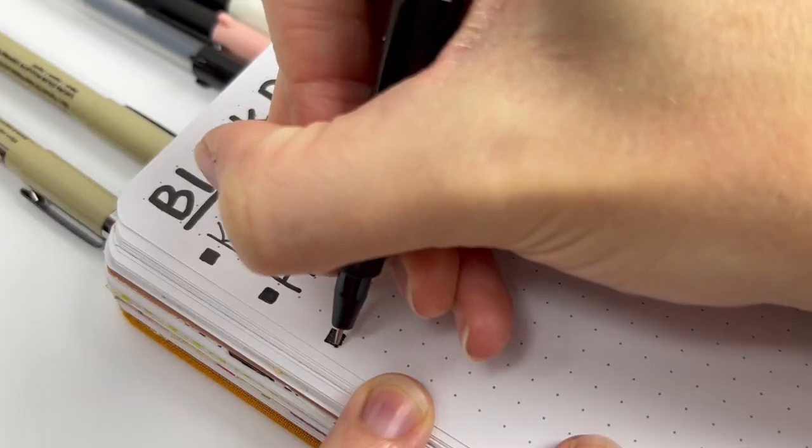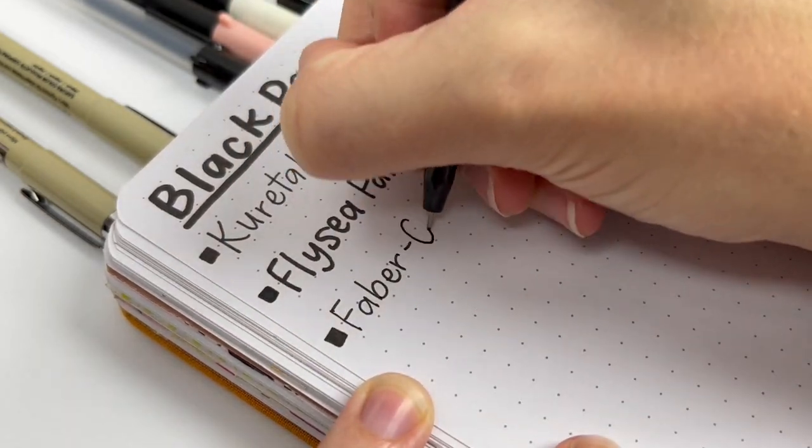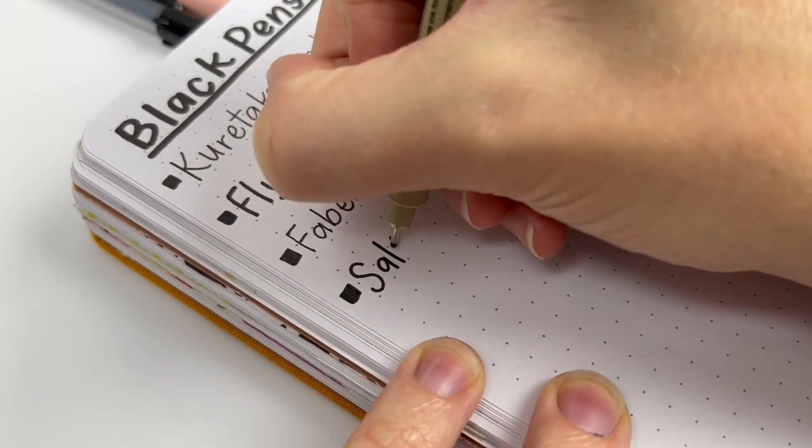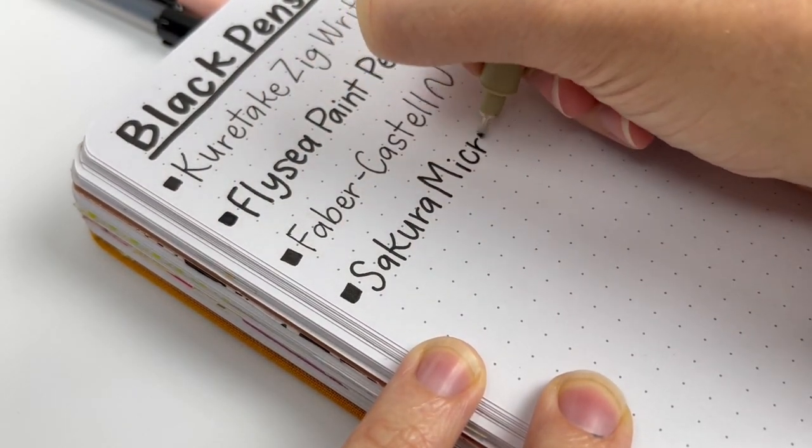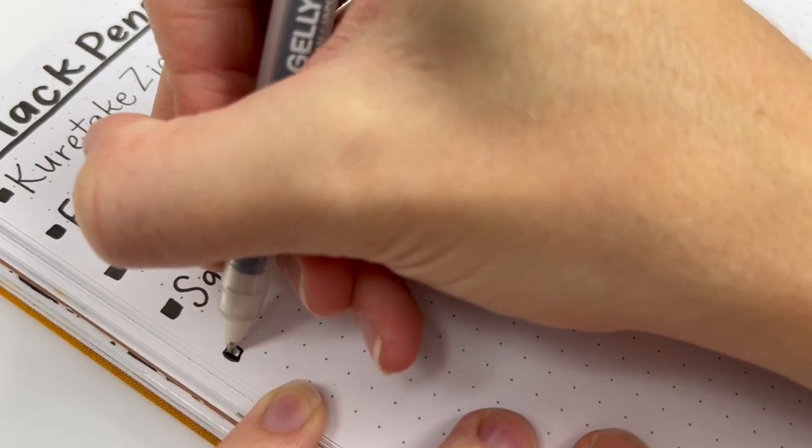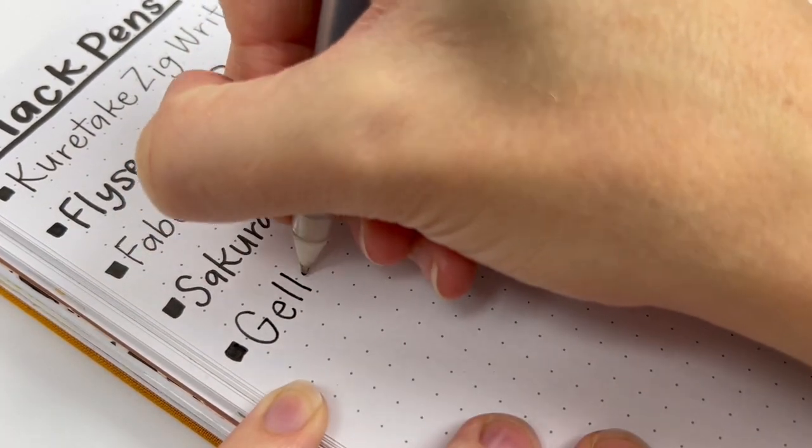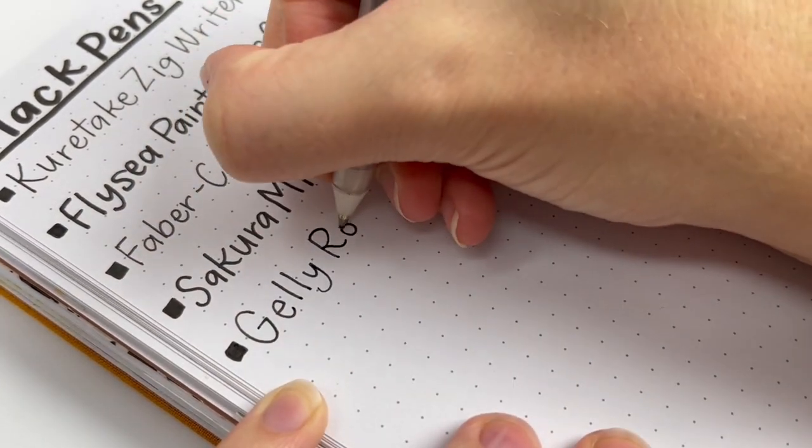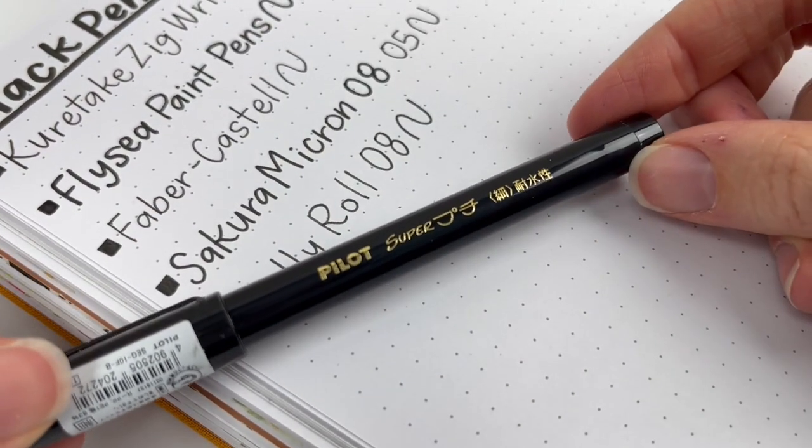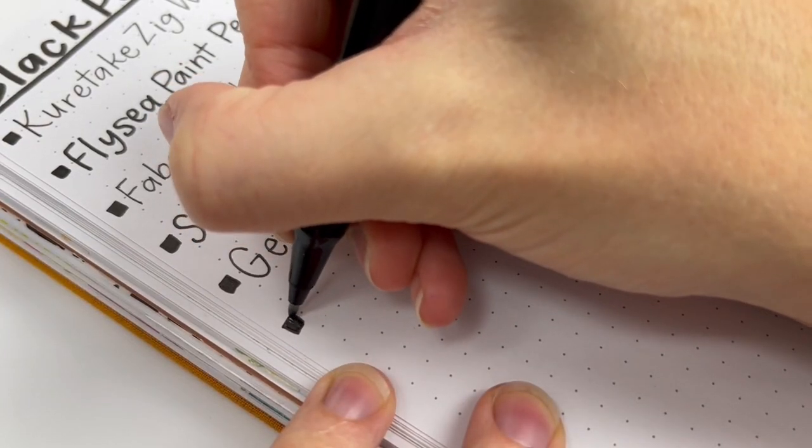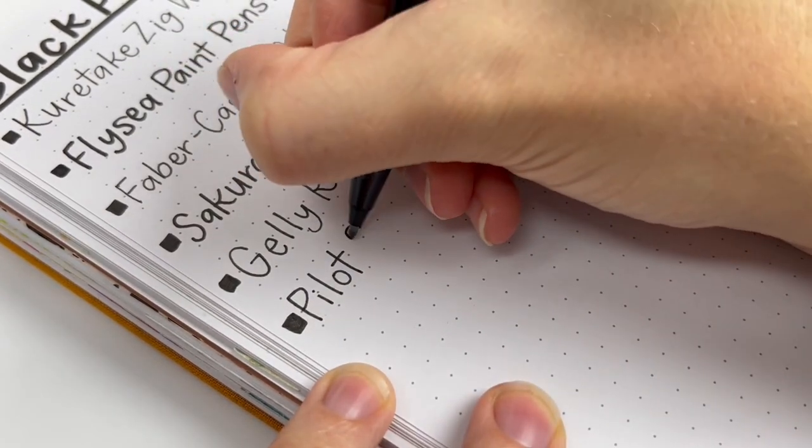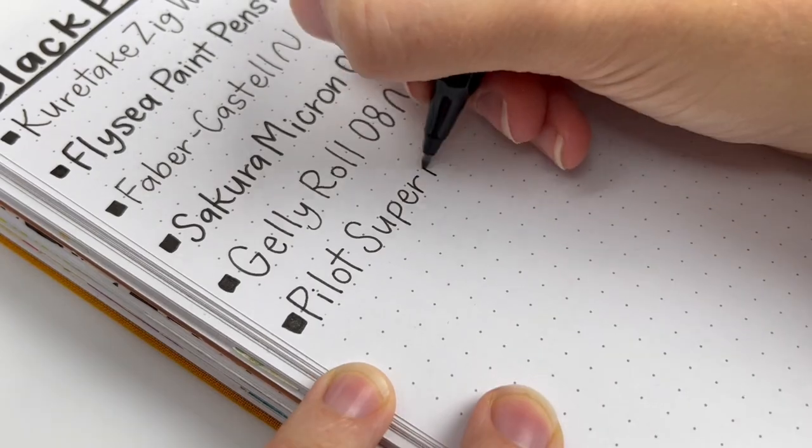And next is my Faber Castell. This one is really good. It's also waterproof. And then next, I have my Microns, my Sakura Microns. I have it in the 08 and the 05, and I do like having the different sizes. They are both waterproof, and they work really well. Next is my Jelly Roll 08. This one is not waterproof. I do like how smooth it is, so I will keep using it. Next is the Pilot Super. I don't know why I have this one, and it is waterproof, but I don't really use it in my lettering. So I'm going to actually just take this one and put it in my purse for when I need a pen when I'm on the go.